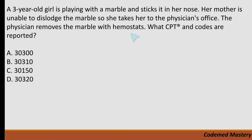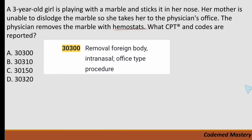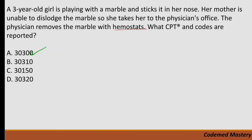A three-year-old girl is playing with a marble and sticks it in her nose. Her mother is unable to dislodge it and takes her to the physician's office. The physician removes the marble with hemostat. Option A, 30300, is for removal of foreign body intranasal, office-type procedure. In our question there is removal of a foreign body, marble, at the physician's office, so this matches.